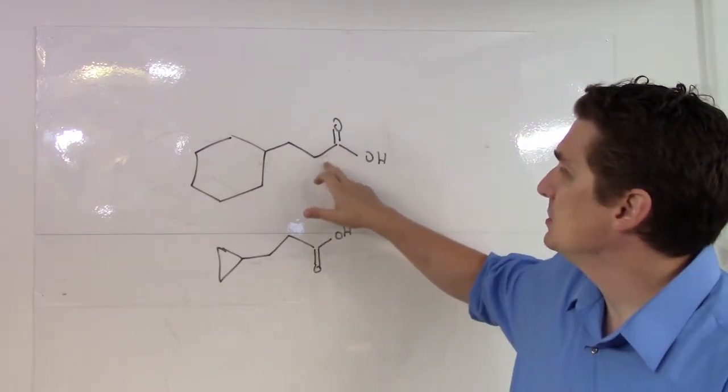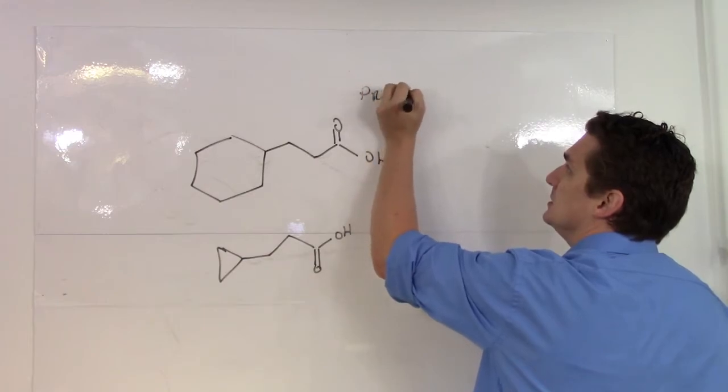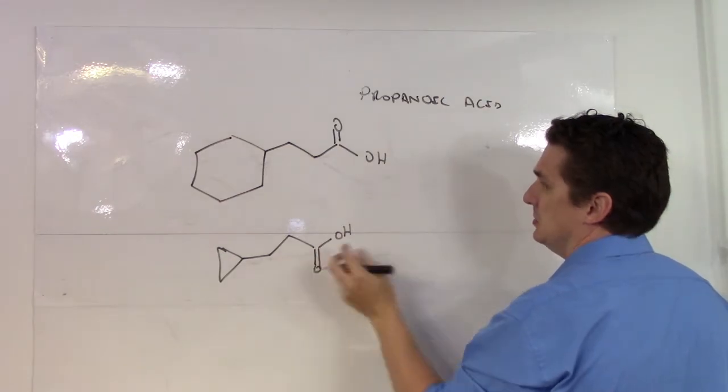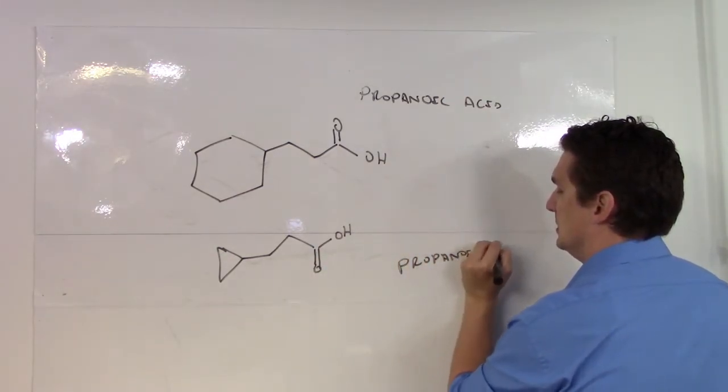So here I've got three carbons, one, two, three. So we've got the propane, OIC for the acid, acid. One, two, three, propanoic acid.